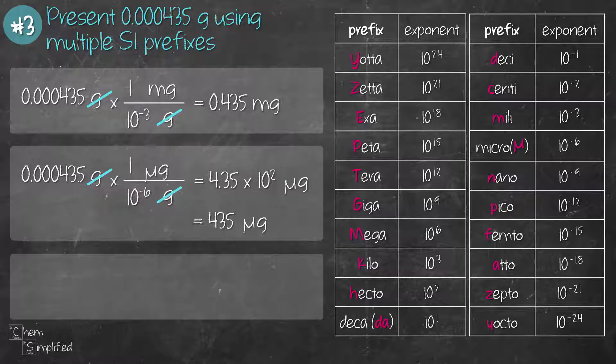And last but not least, let's convert it to a positive exponent. Let's convert that value to kilograms. So we place grams at the bottom so it cancels out, and then we place kilogram on the top. From the SI prefix table, kilo's exponent is 10 to the power of 3. So again, 1 kilo is 10 to the power of 3 grams. Solve the math and it works out to be 4.35 times 10 to the negative 7 kilograms.